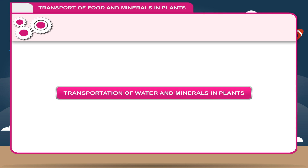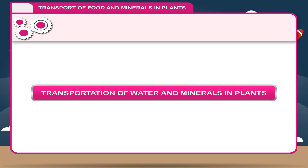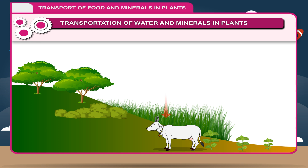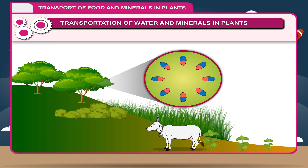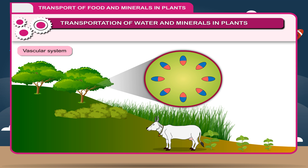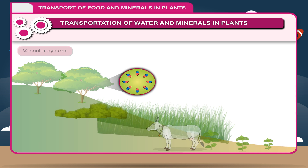Transportation of water and minerals in plants — like animals, plants also have a mechanism of transportation of mineral solution. This takes place through a system called the vascular system. In plants, the vascular system consists of two types of conducting tissues.